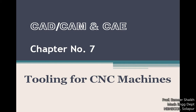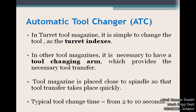We are going to discuss unit number 7, which is tooling for CNC machines, in our subject CAD CAM and CAE. In the previous session we discussed what a tool magazine is and the different types of tool magazines placed in modern CNC machines. In today's session we are going to discuss what is an automatic tool changer, or automatic tool changing arm — sometimes also called as ATC arm.